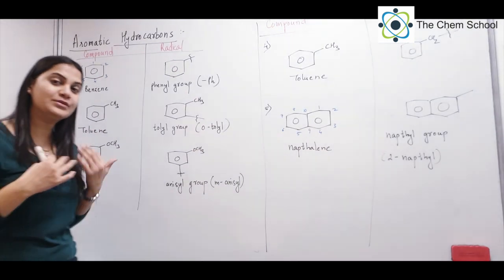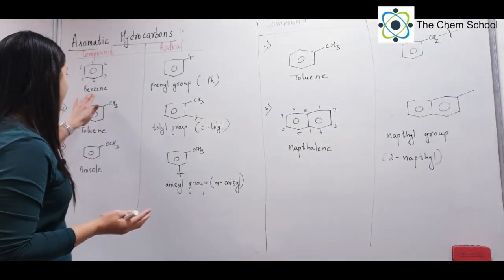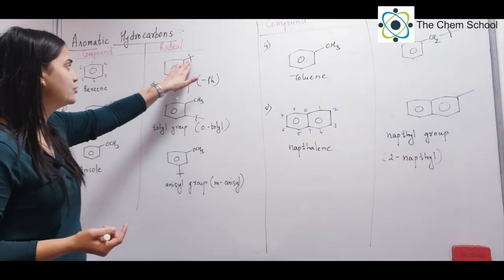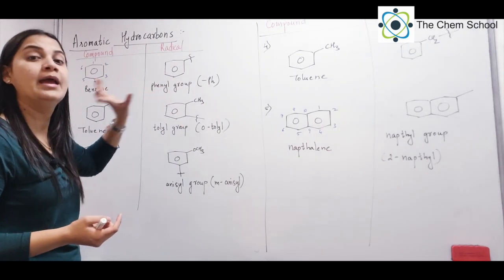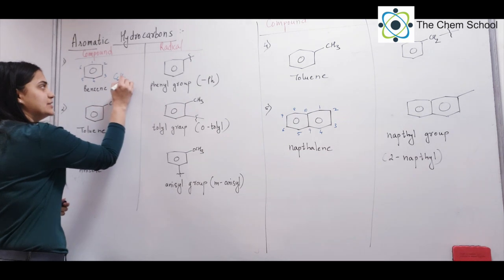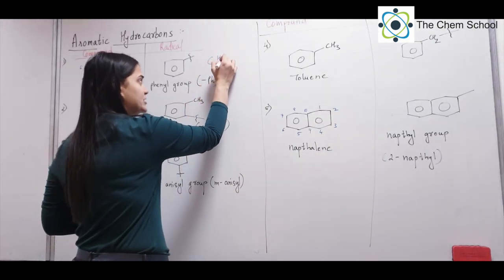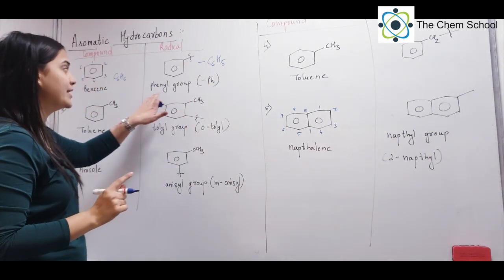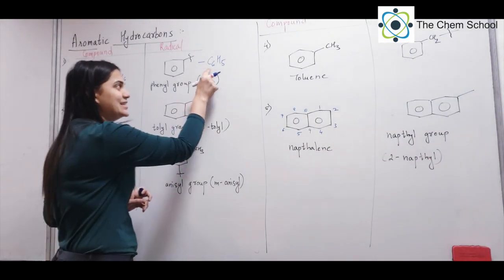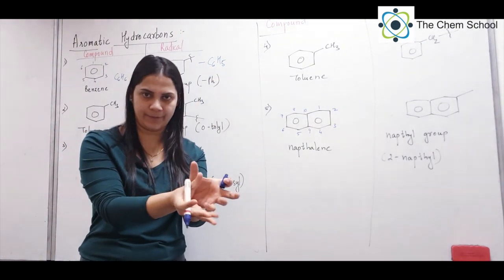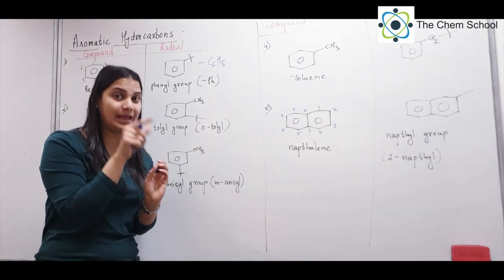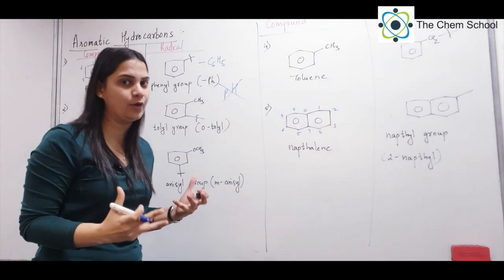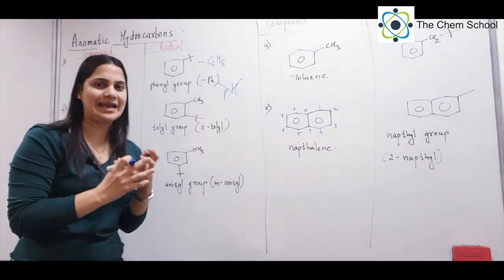Now, the radical — meaning when a substitution happens on benzene. If I remove one hydrogen from benzene, there will be one free valency. This free group is called the phenyl group. Benzene is C6H6, but if I remove one hydrogen, you get C6H5. This C6H5 can also be written as Ph — capital P and small h — and it is called the phenyl group. Wherever you see C6H5 or Ph, that is your phenyl group.